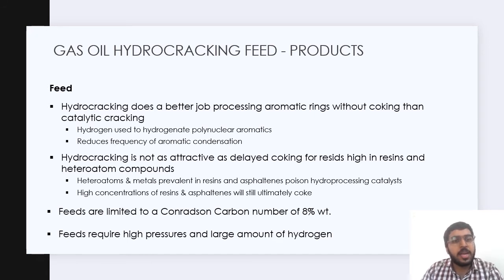Now we know the typical feedstocks and products in hydrocracking. Let's look at one in more detail: the gas oil hydrocracking feed and product analysis. First the feed. Hydrocracking does a better job processing aromatic rings without coking than catalytic cracking. Hydrogen is used to hydrogenate polynuclear aromatics, reducing the frequency of aromatic condensation. Hydrocracking is not as attractive as delayed coking for resists high in resins and heteroatom compounds. Heteroatoms and metals prevalent in resins and asphaltenes poison the hydroprocessing catalyst. High concentration of resins and asphaltenes will still ultimately coke. The feeds are limited to a Conradson number of 8% weight, and feeds require high pressure and large amounts of hydrogen.